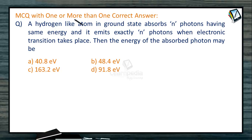MCQ with one or more than one correct answers. A hydrogen-like atom in ground state absorbs n photons having same energy and emits exactly n photons when electronic transition takes place. Then the energy of the absorbed photon may be...